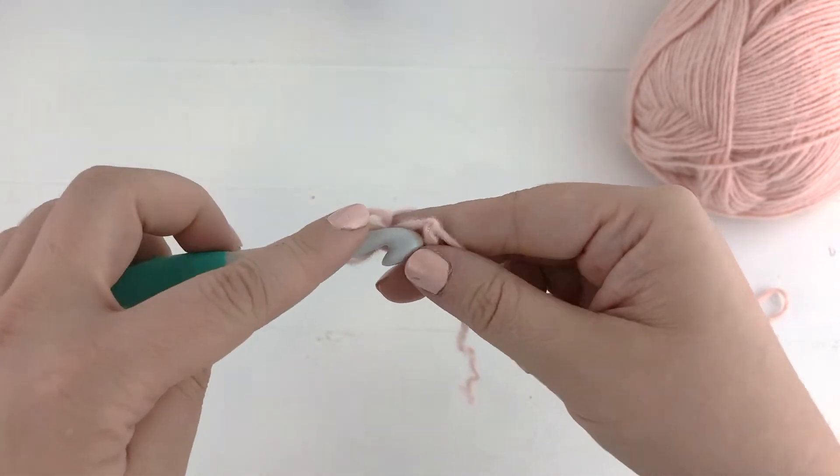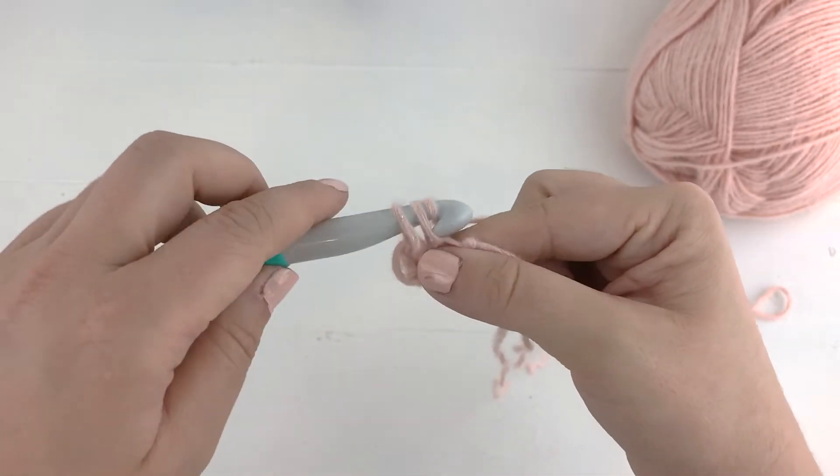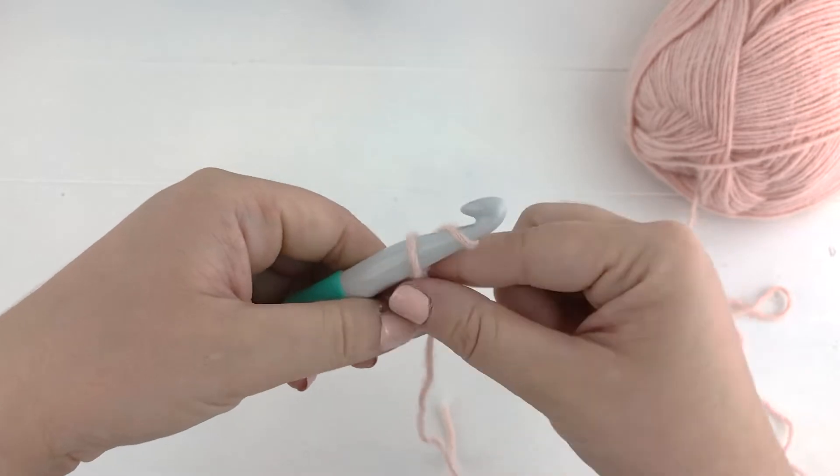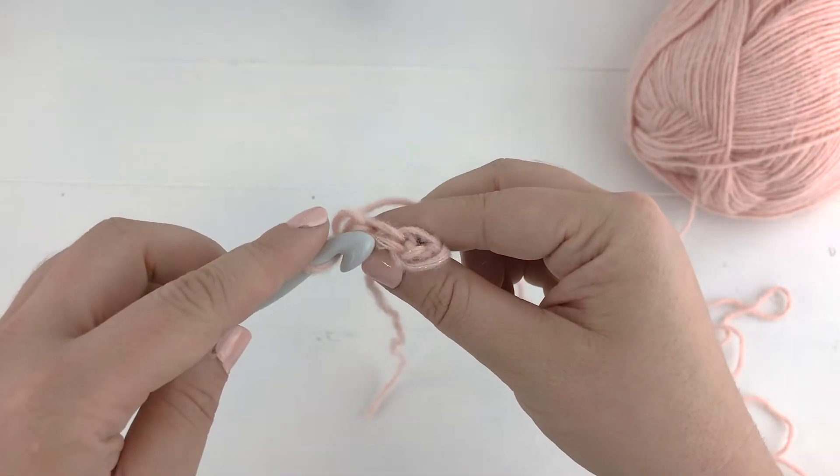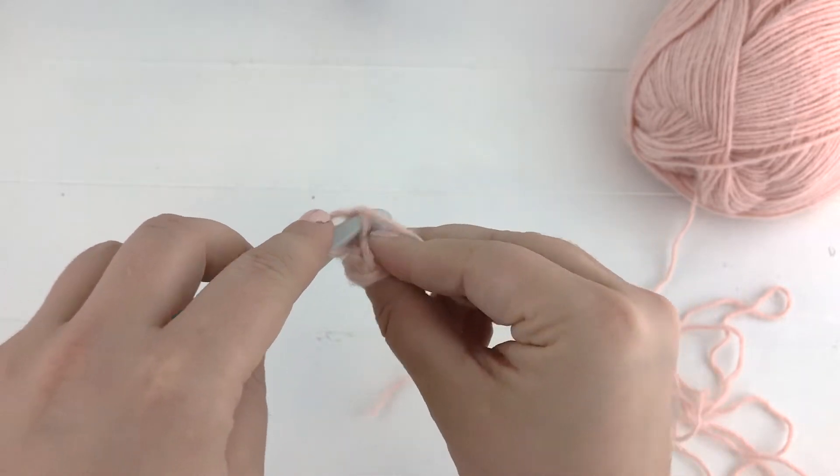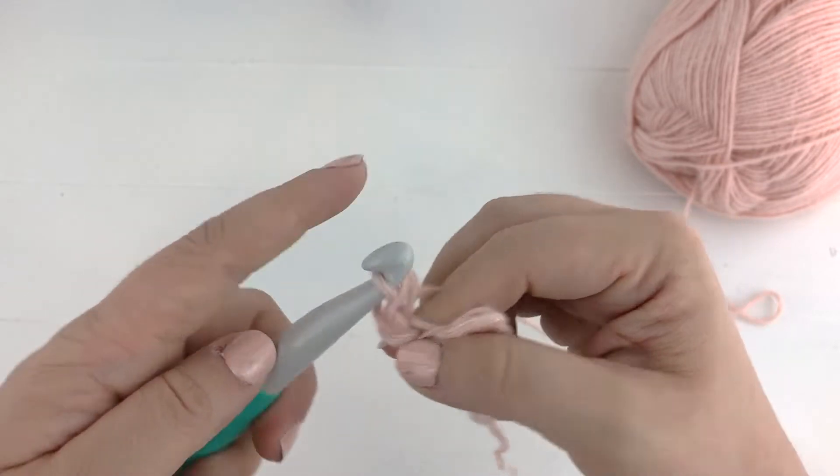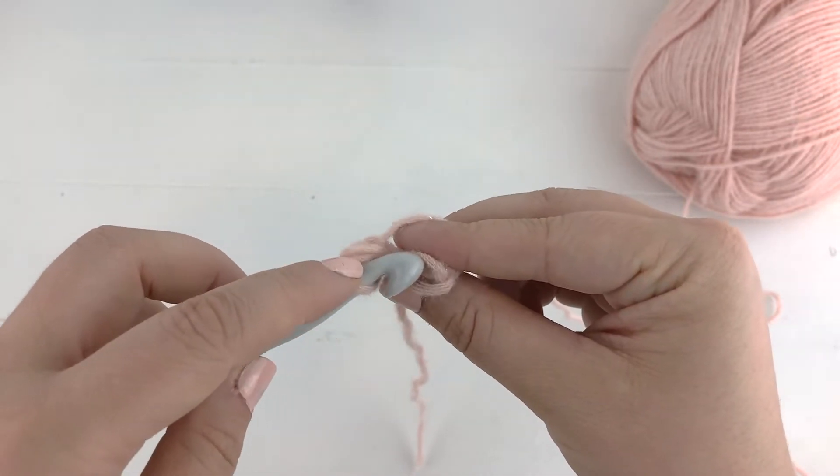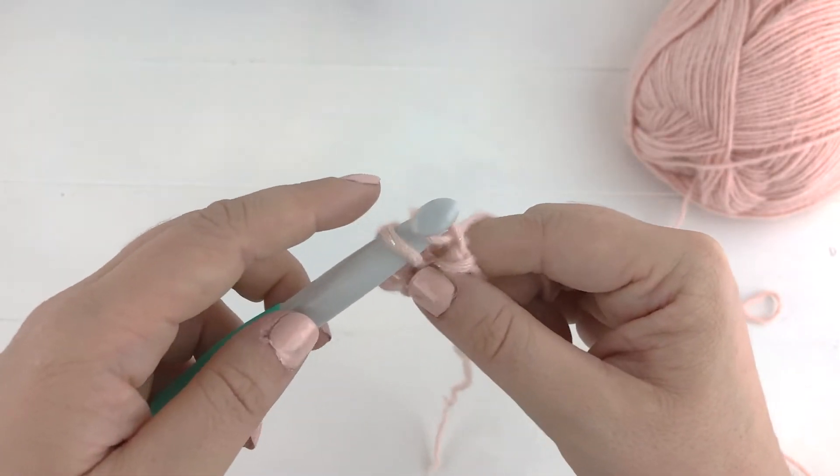So only two stitches in your first row. For row two we will chain one, turn our work, and single crochet into the back loops only of each stitch across. So working into this back loop we'll single crochet.